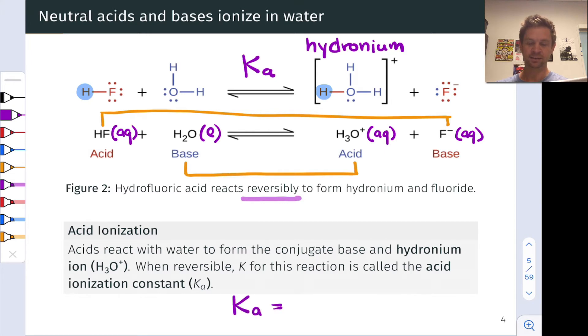K-A is equal to, just as we've seen for equilibrium constants many times already, we have the products in the numerator and the reactants in the denominator. H3O+, hydronium ion is a product, and F minus fluoride anion is a product. And in the denominator, we have HF, the acid, and water is omitted.